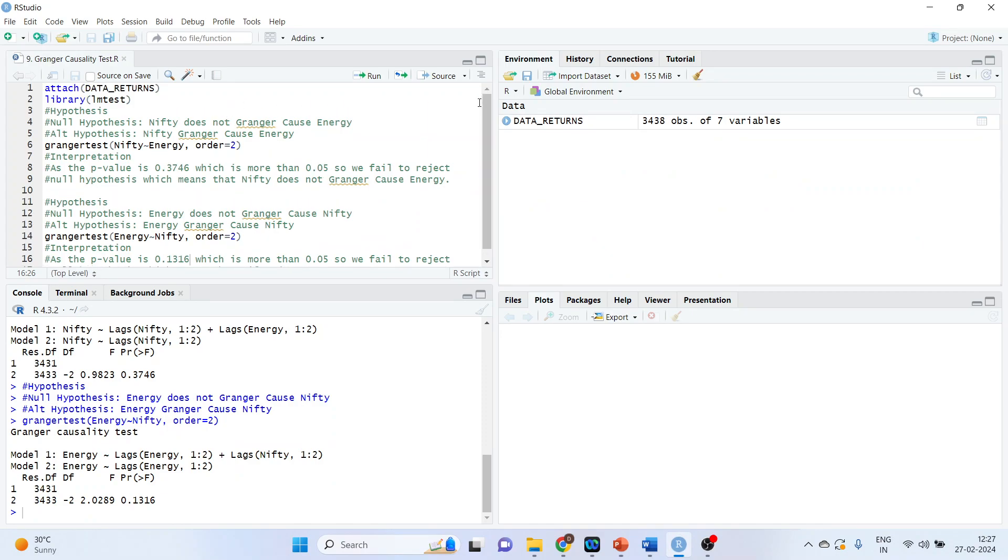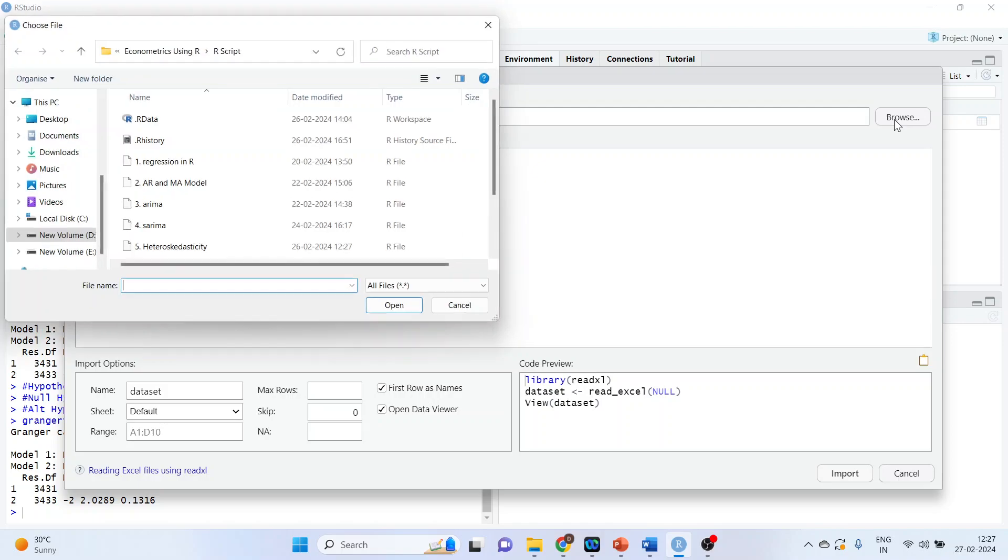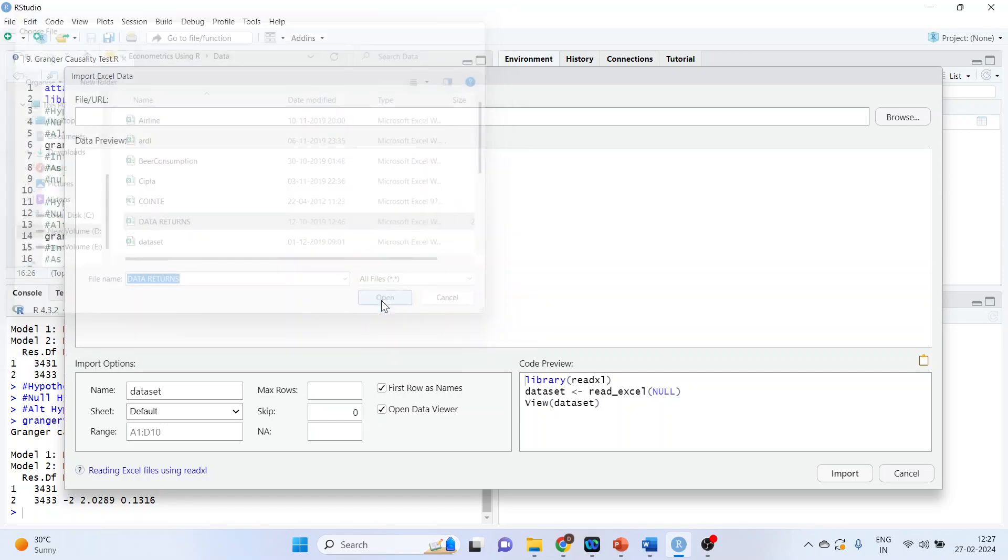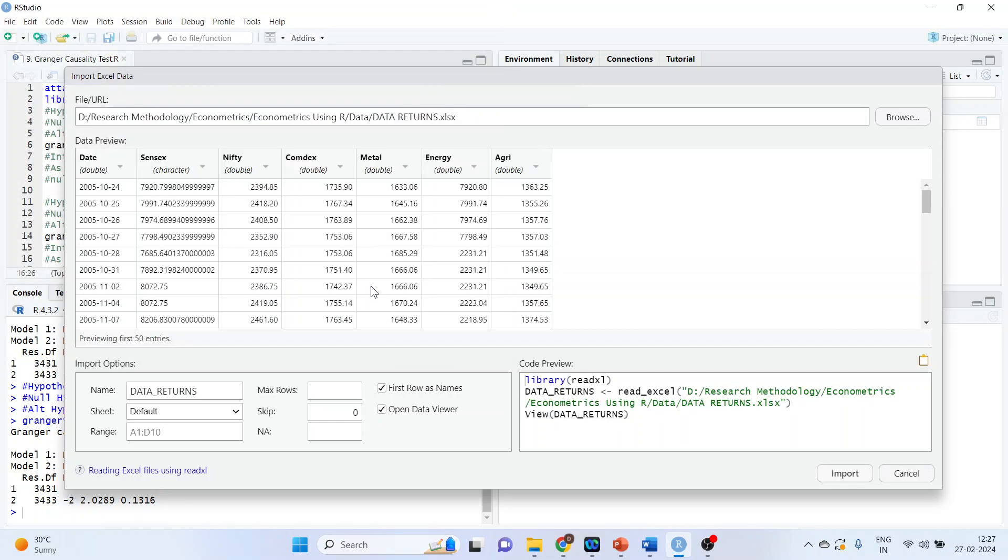The first thing we will have to do is import the data set. So click on environment, import the data set from Excel. The name of the data set is data returns. So click here. Open. So in the first column, we are having date, sensex, nifty, comdex, metal, energy and agriculture. Press import.